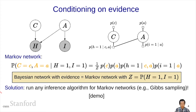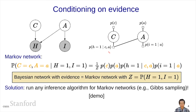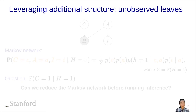So we have a Bayesian network, we condition on evidence, we form the reduced factor graph or Markov network, and then we run Gibbs sampling. But I want to push this further and show how we can leverage the structure of Bayesian networks to optimize things.